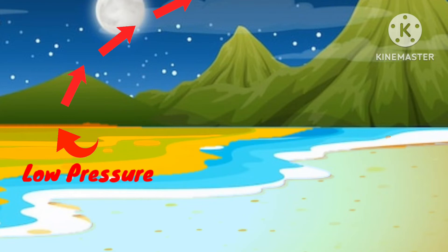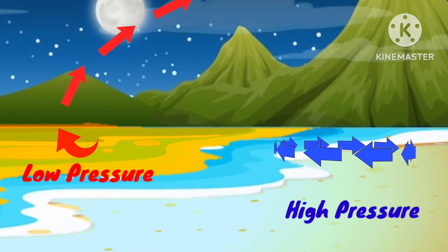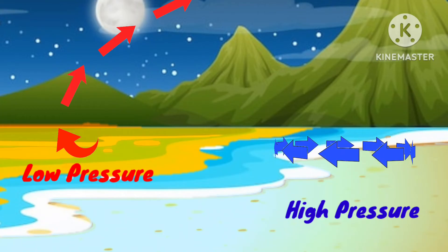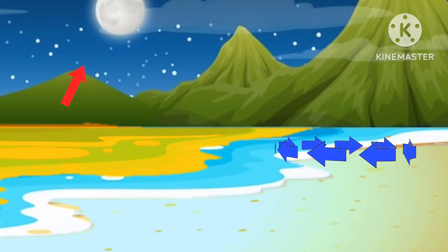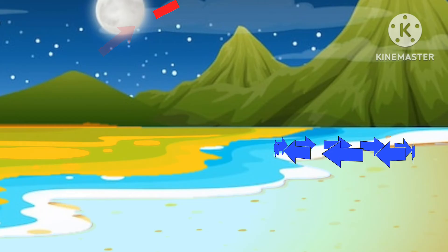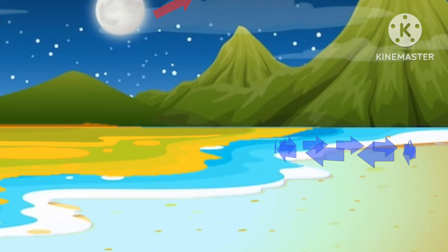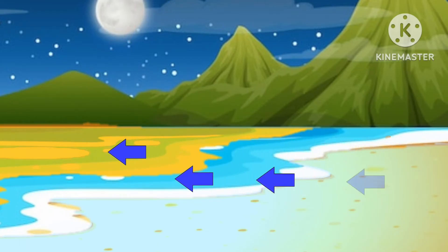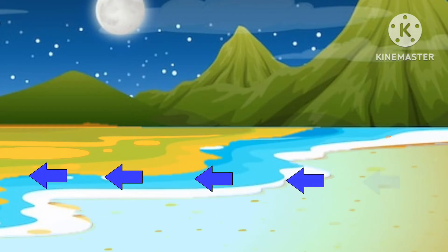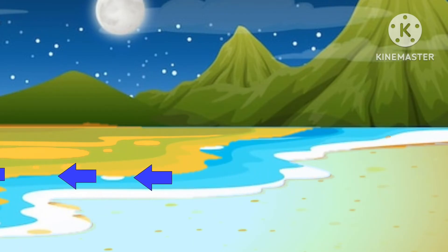This results in a low pressure region over the water and a high pressure region over the land. The air above the water is comparatively warmer and rises up, thus creating space for cool wind over land to move in towards the sea. This is called land breeze.